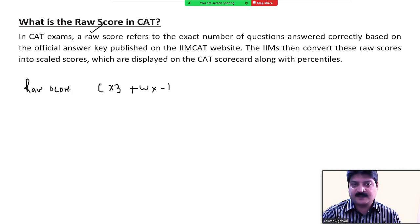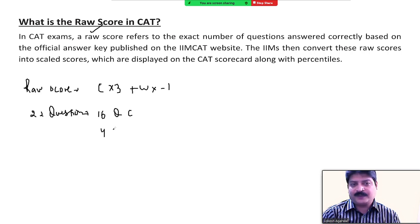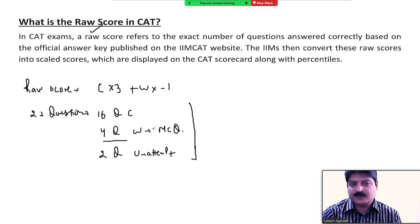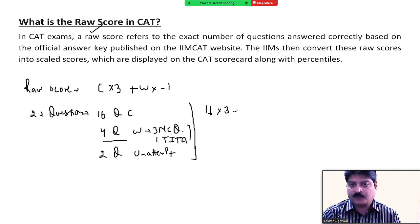Let's take a simple example. Say there are 22 questions in the quant section, and you get 16 questions correct, 4 questions wrong, and 2 questions unattempted. I'm assuming all the wrong questions are MCQ-based, because TITA (type in the answer) questions do not have negative marking. Raw score: 16 correct × 3 = 48 marks.